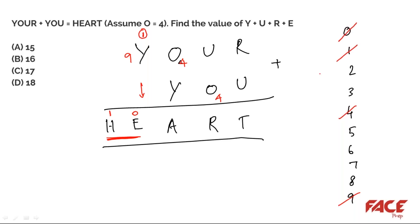Now I replace Y with 9 in the tens column: O + Y = 4 + 9. This can either be just 4 + 9, giving 13, so A = 3 with a carryover of 1 going left — or there could be a carryover coming in, making it 1 + 4 + 9 = 14, giving A = 4 with carryover 1.